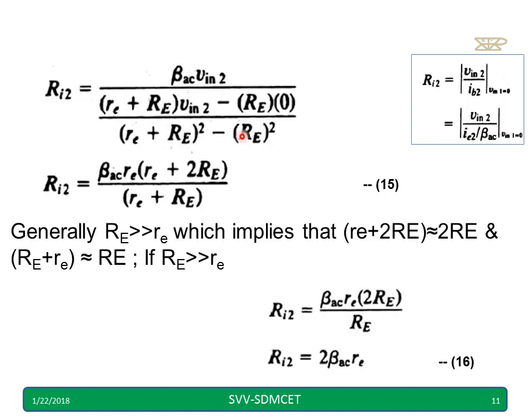So when I substitute i2, again I will get i2 here and re into 0. vin1 I have made 0, hence it will become 0. Again I will cancel vin2, vin2, and again I expand this (a plus b) whole square like that. RE square and re square will get cancelled, I will get this. ri2 is given by equation number 15.